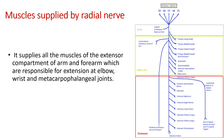A radial nerve lesion will affect only the extension of the elbow joint, wrist joint, and metacarpophalangeal joint, depending upon the site of the lesion.